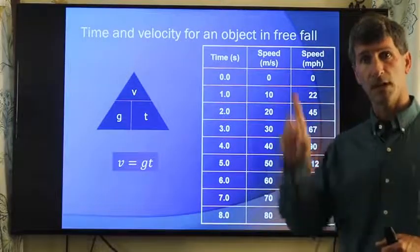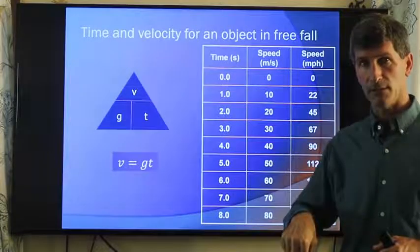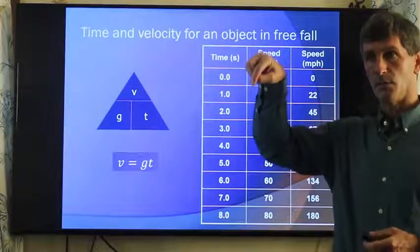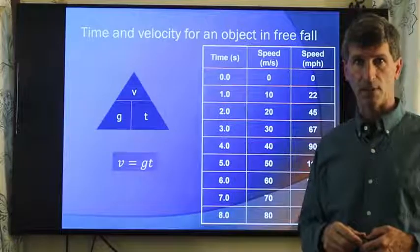Typically, the convention is velocity upward is positive, velocity downward is negative. So your acceleration would actually be negative g, or negative 9.8 meters per second squared.